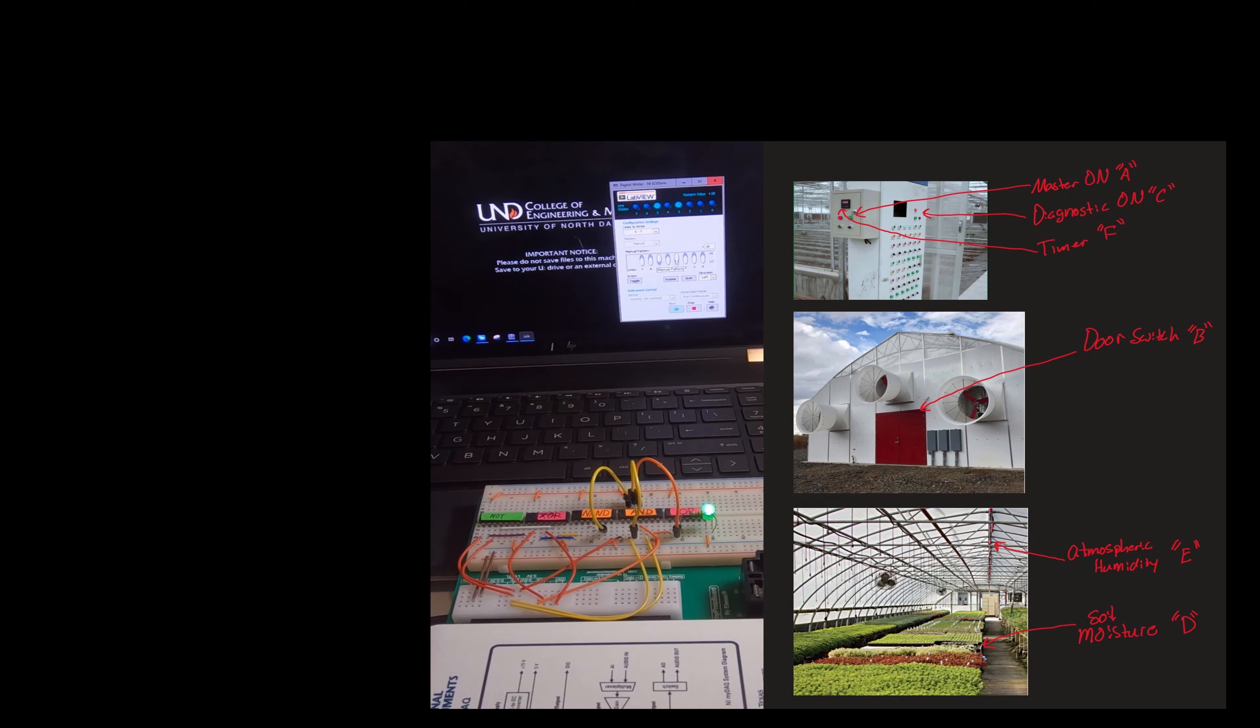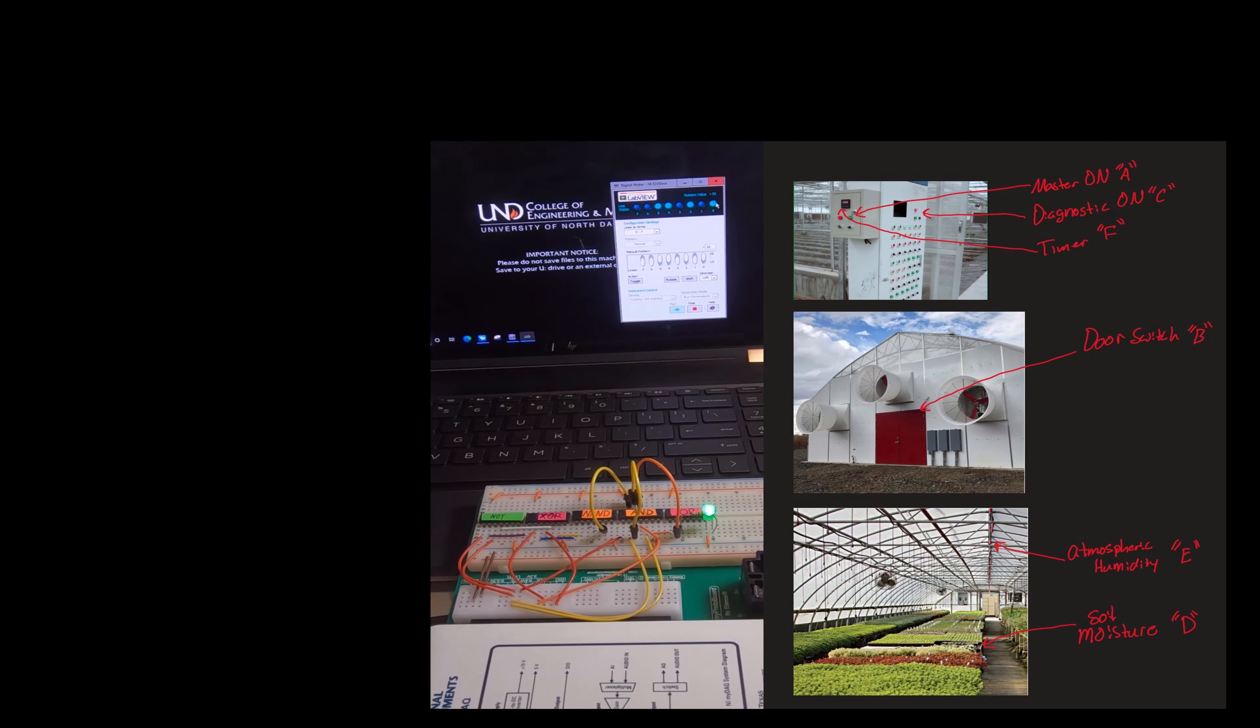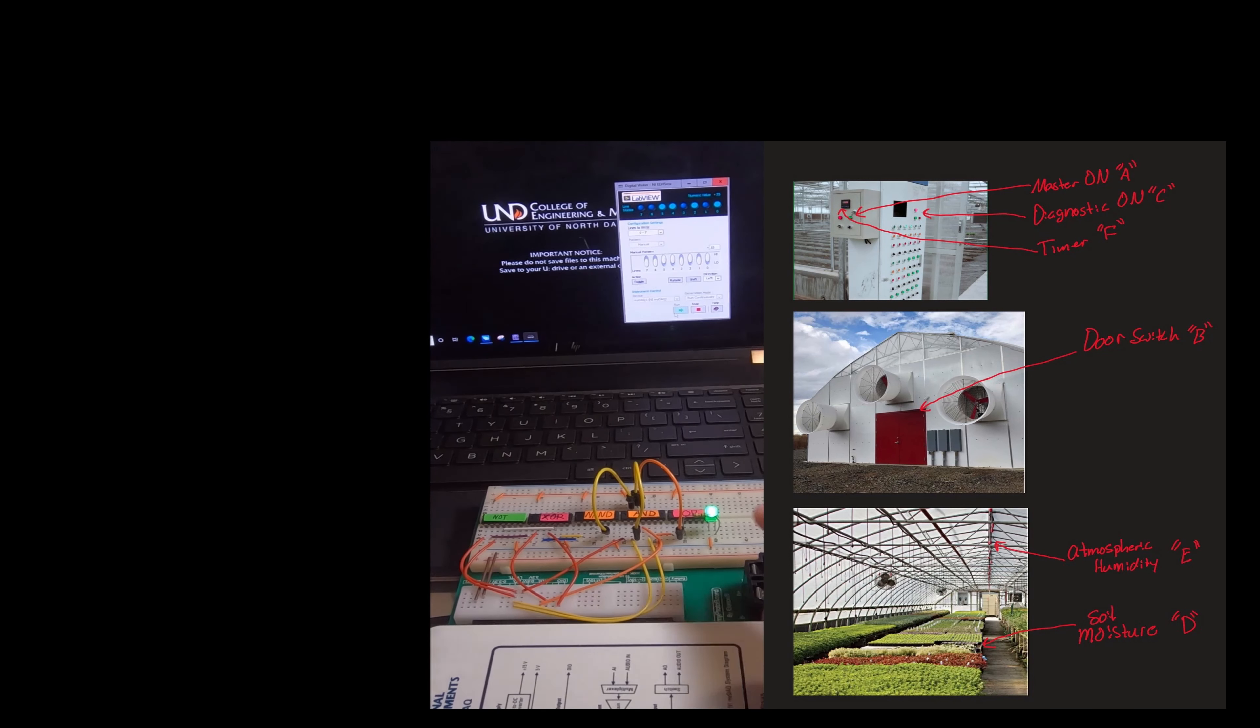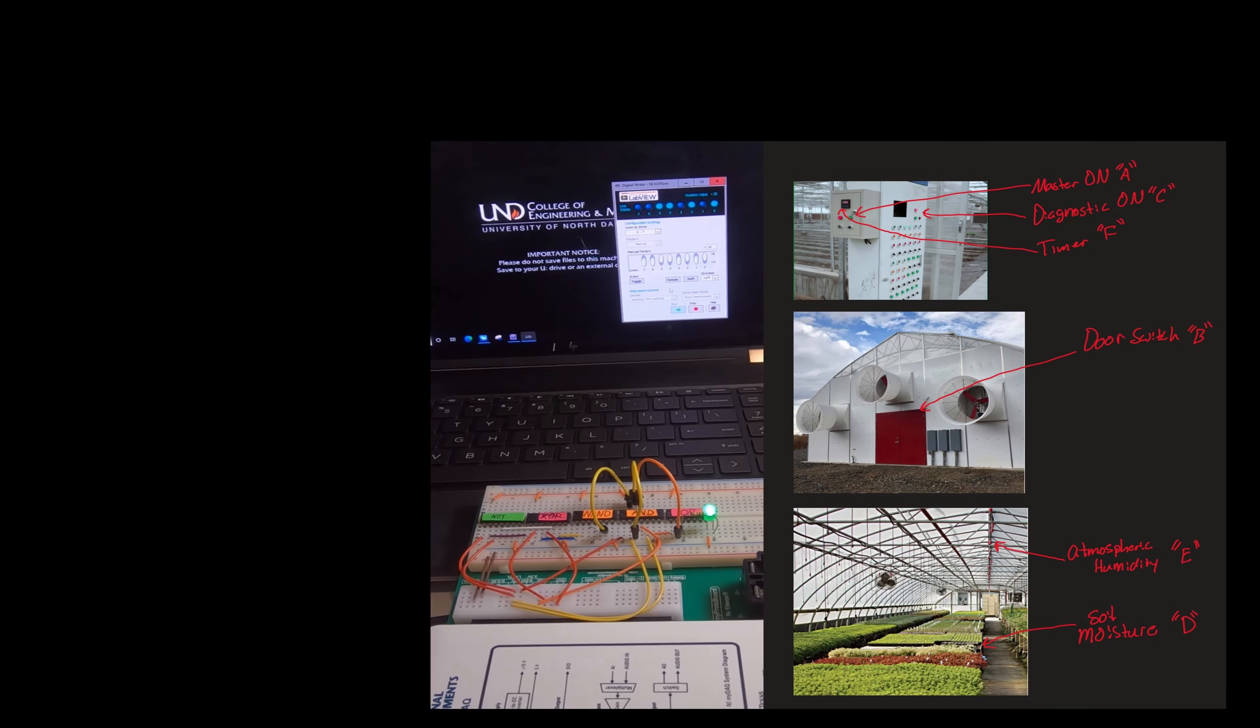To prove out that the irrigation system would work after monitoring the A master on switch, B door switch—C is our diagnostic switch, so we're going to skip that—we go to D, which is our moisture sensor in the soil, and then we also look to make sure that it's been greater than one hour since the last on event. So if that variable is satisfied, F goes high, and you can see the LED coming on. Our irrigation system is on.